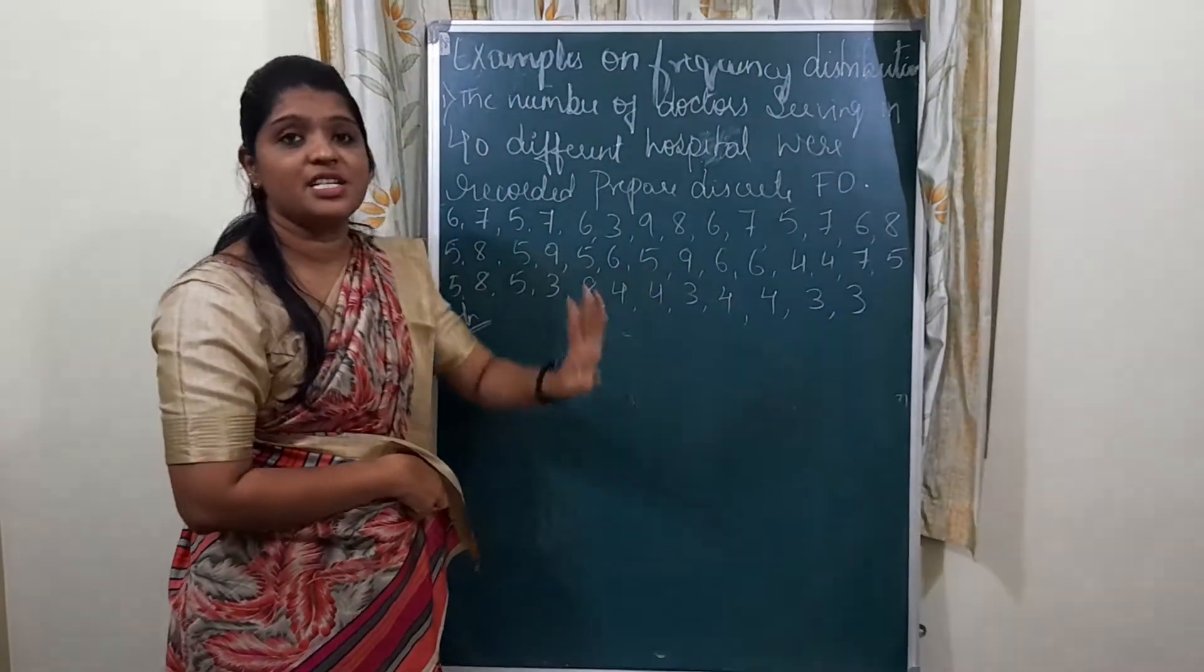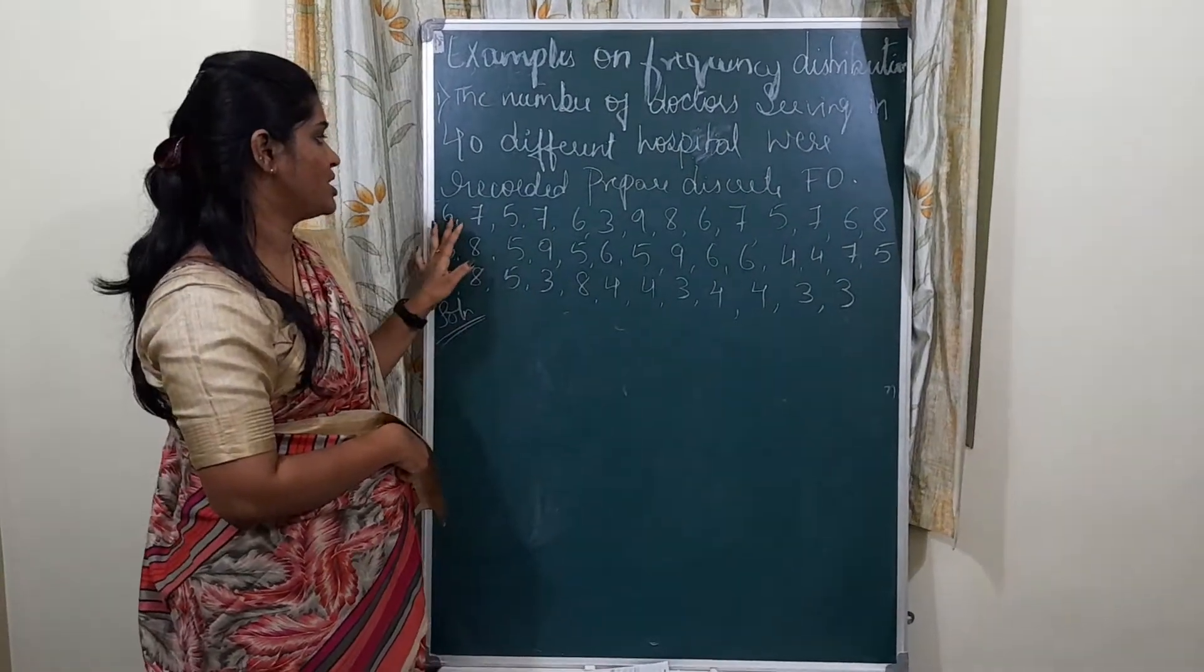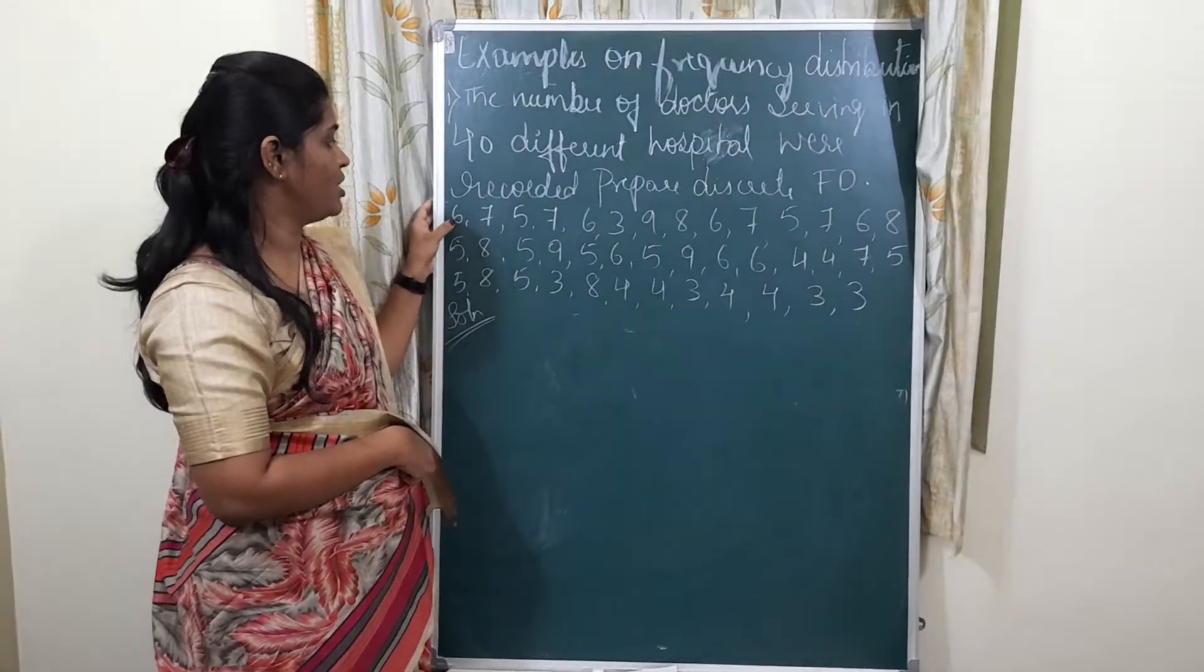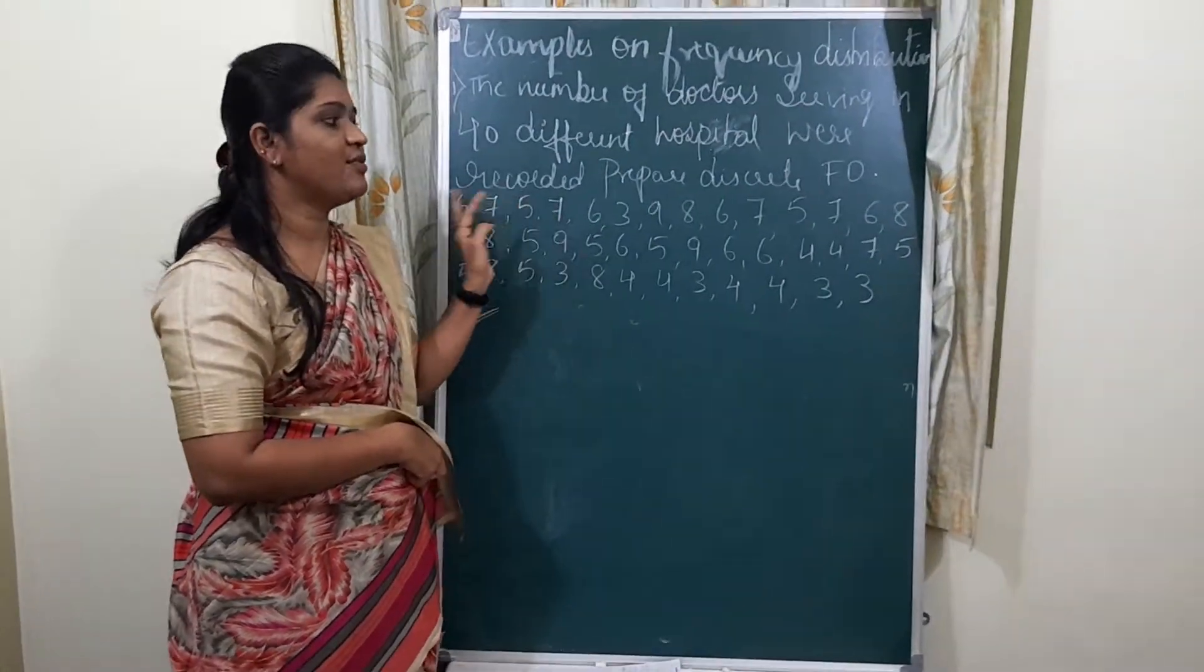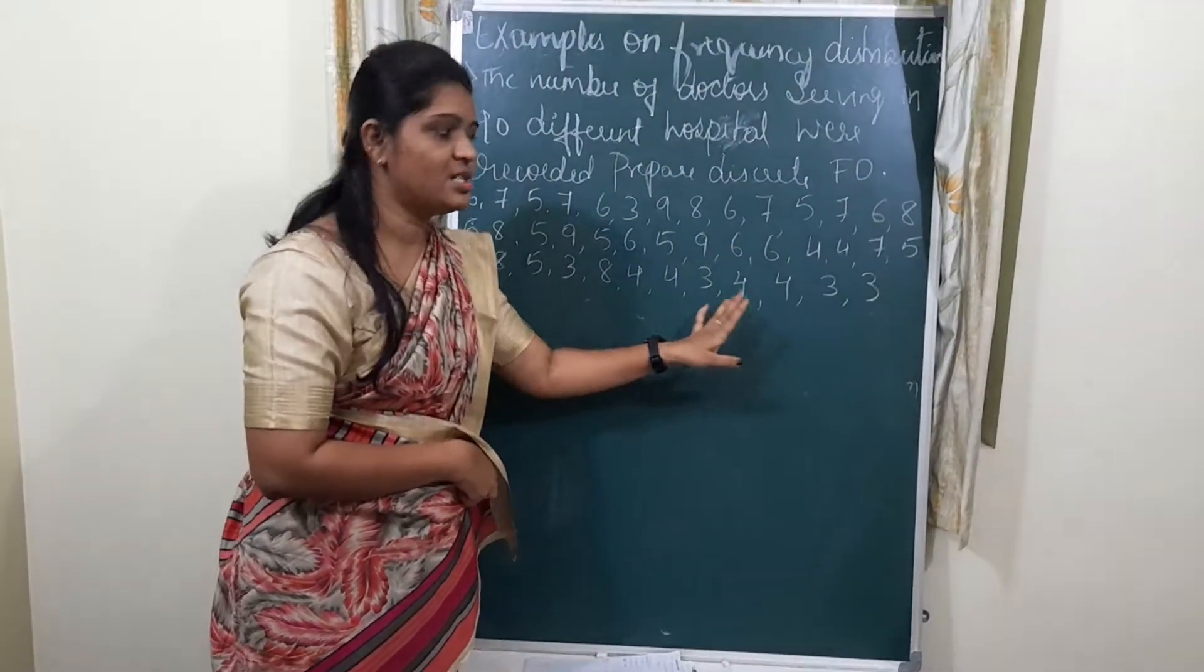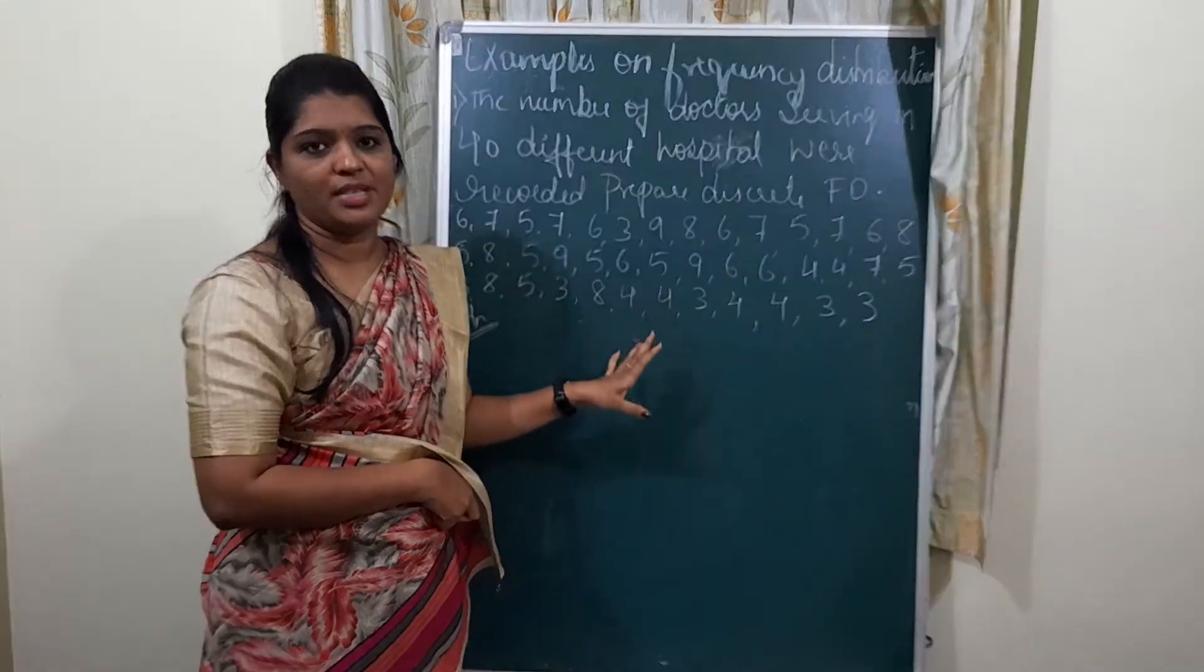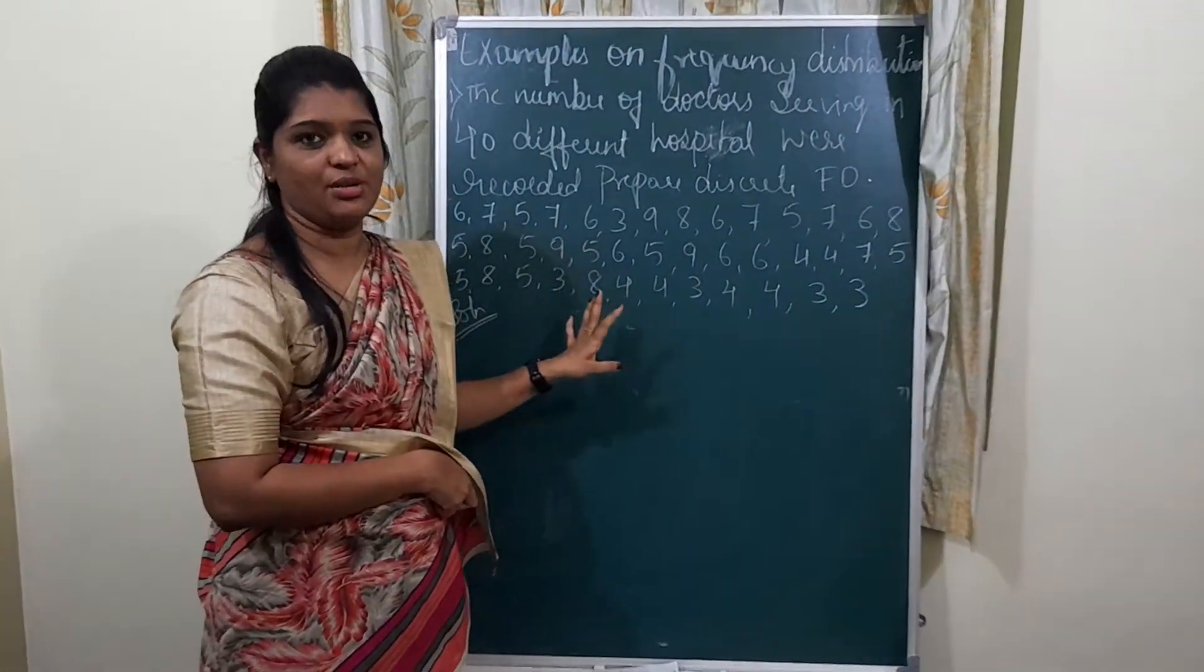This is the number of doctors serving in 40 hospitals. First one hospital that you should research and die cell functions. This is the question, okay?